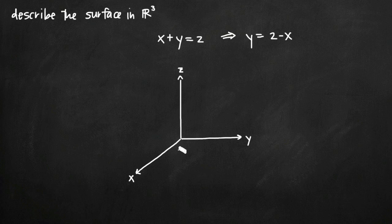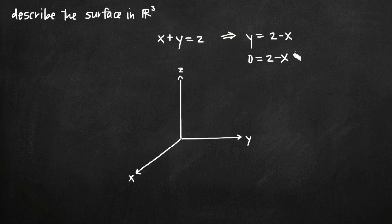Whenever y is equal to 0, we're along the x-axis — there's no z-variable involved, so it is that simple. We plug in 0 for y and get 0 equals 2 minus x. Adding x to both sides, we get x equals 2. So at x equals 2, our region is going to intersect the x-axis.